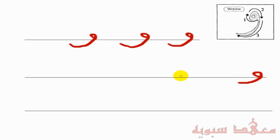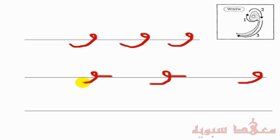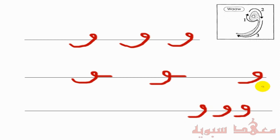In the middle form, this is the previous letter — you just come around and then do this. The next letter that comes after the Waw will not join to it. The final form, if it's the final letter, is the same. So if we joined three Waws together, it'd be as follows — it's just the isolated forms one after the other.